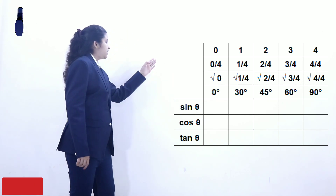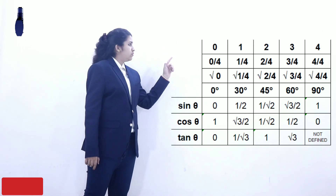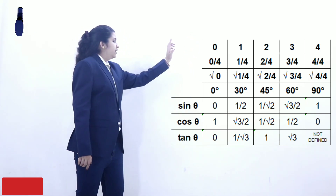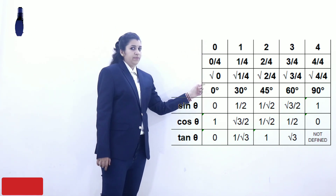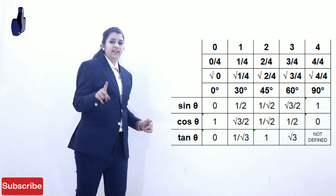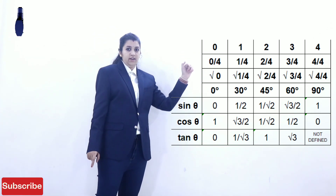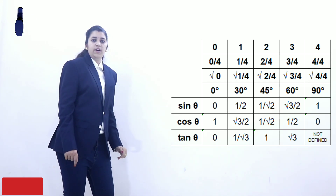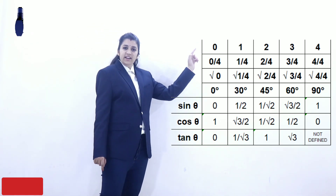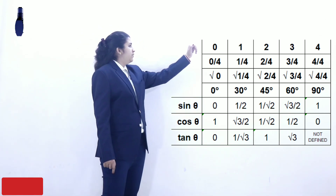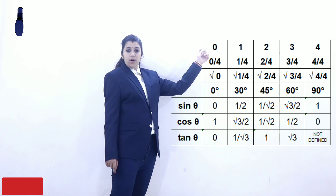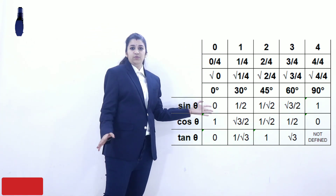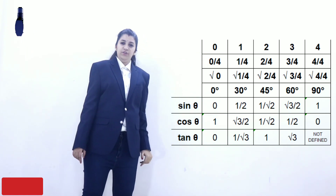Now the trick begins. For sin 0°, we have 0 — so sin 0° = 0. For sin 30°, we take the square root of 1/4, which gives 1/2 — so sin 30° = 1/2. For sin 45°, the square root of 1/2 is 1/√2 — so sin 45° = 1/√2.